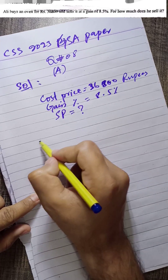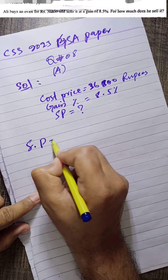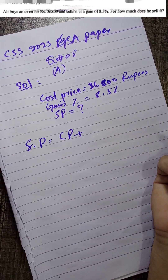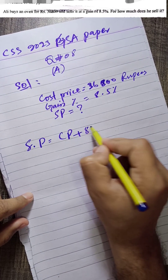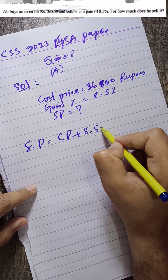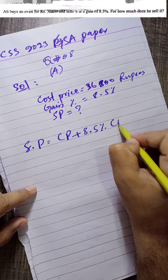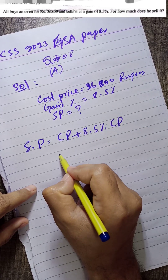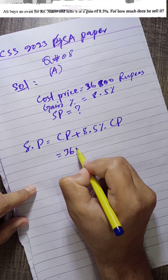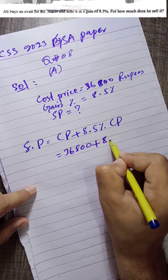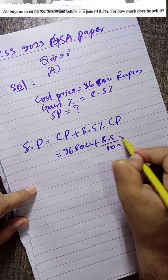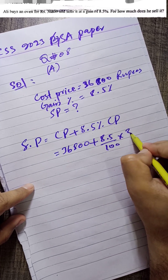The sale price will be equal to cost price plus the profit he has gained, which is 8.5% of the cost price. So sale price equals 36,800 plus 8.5% of 36,800.